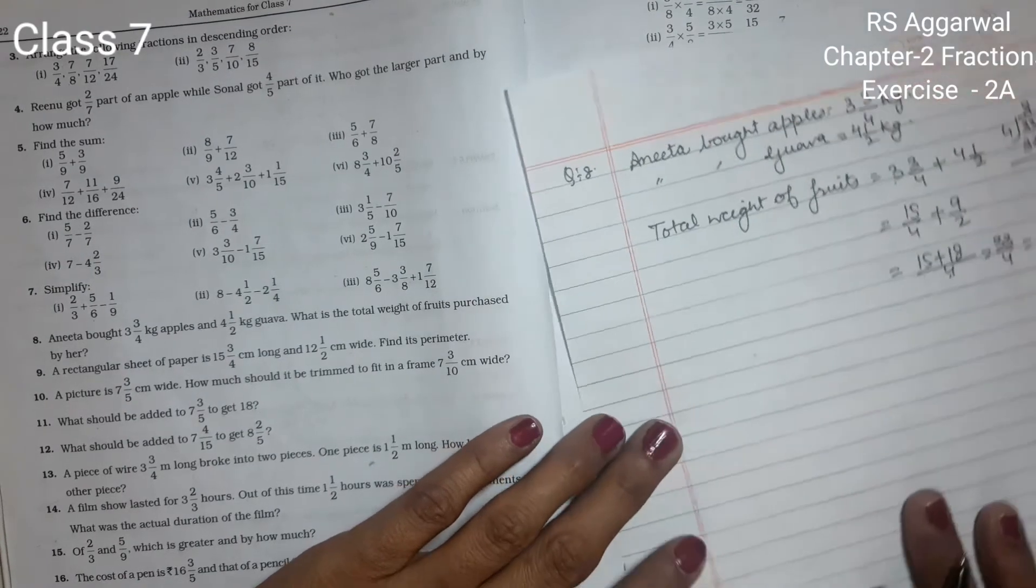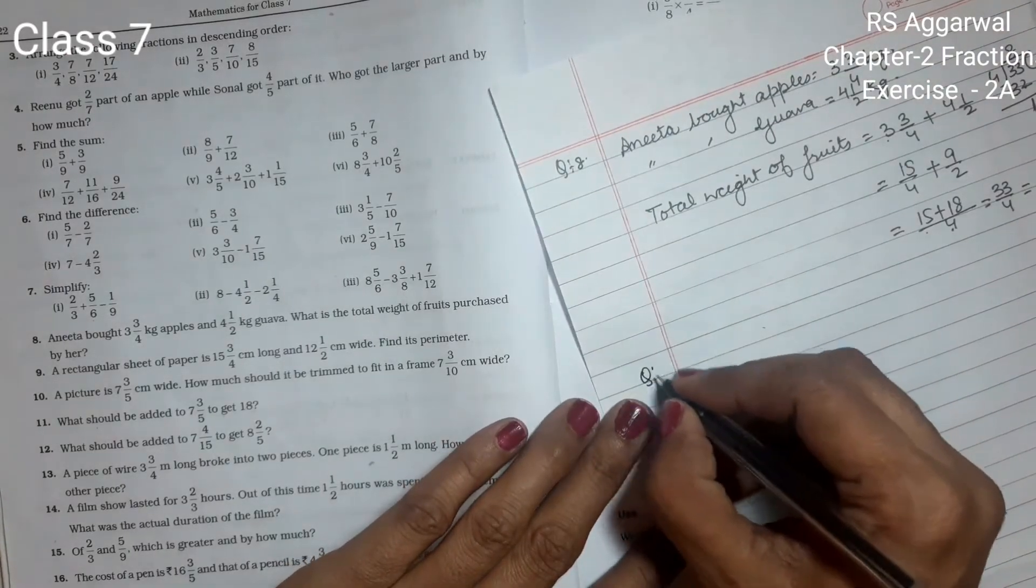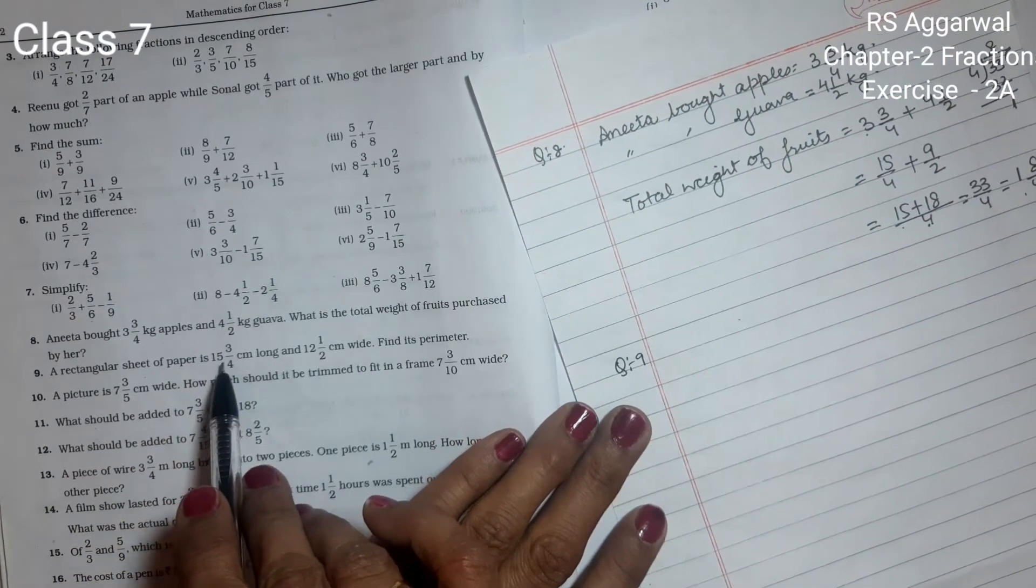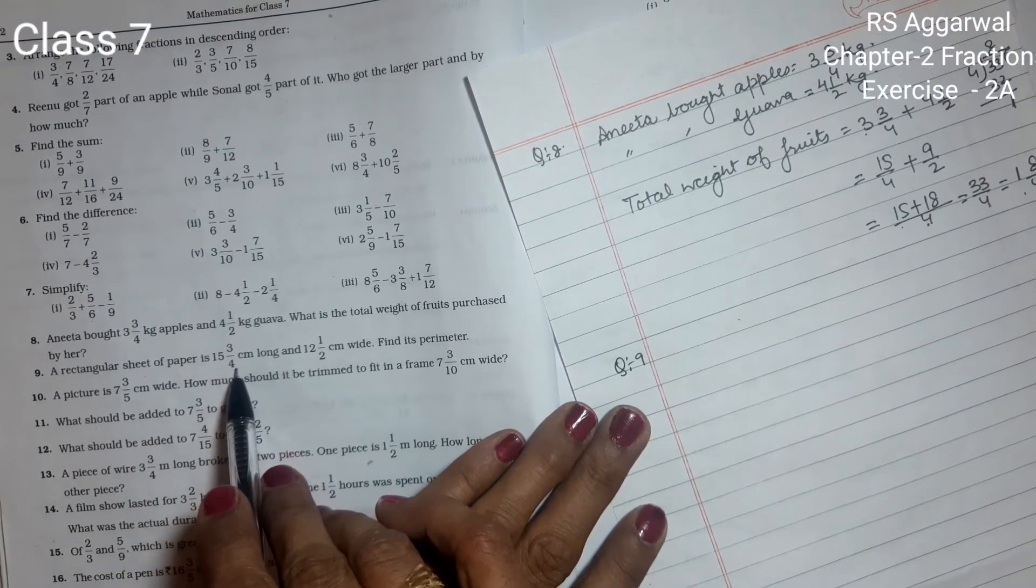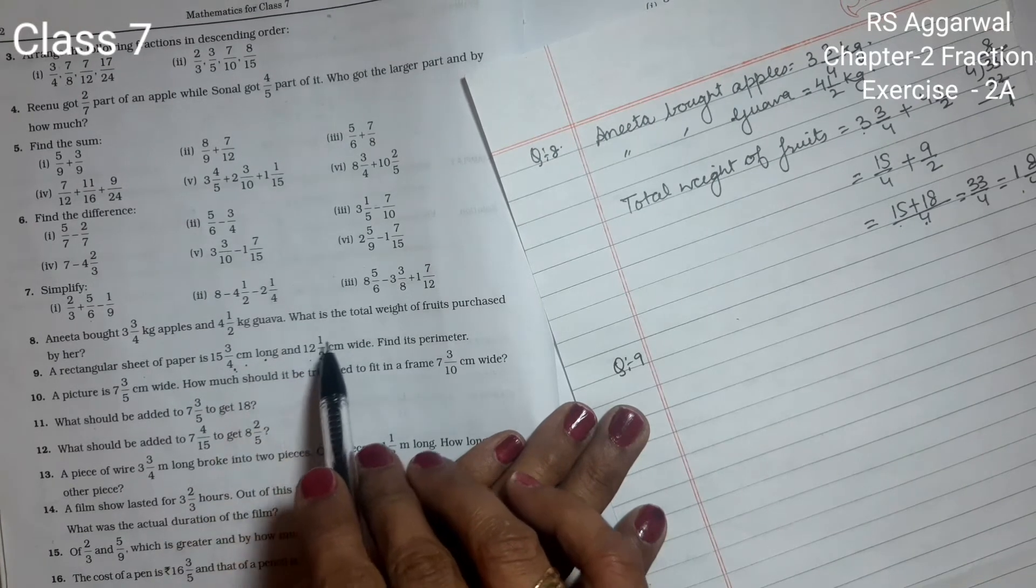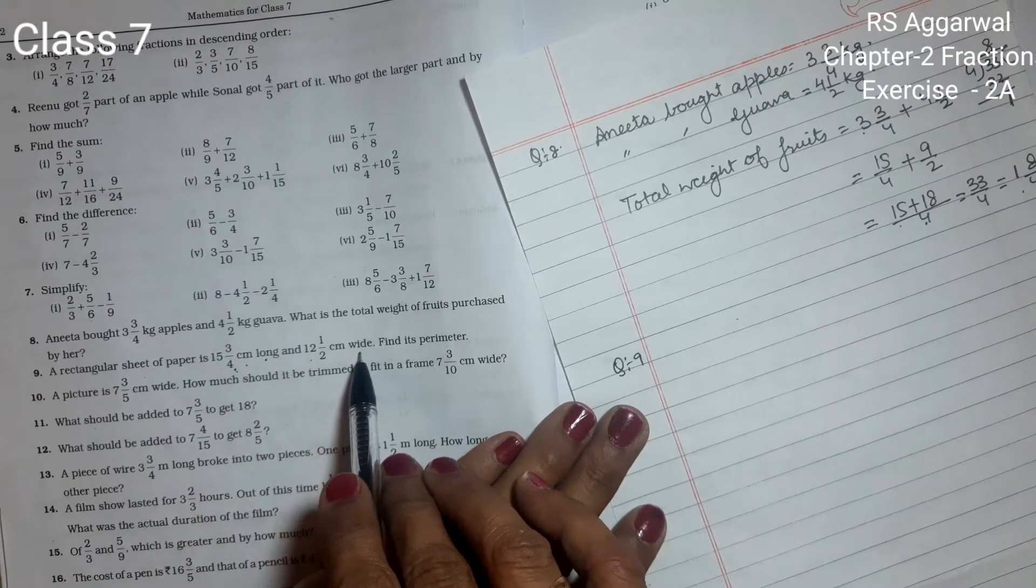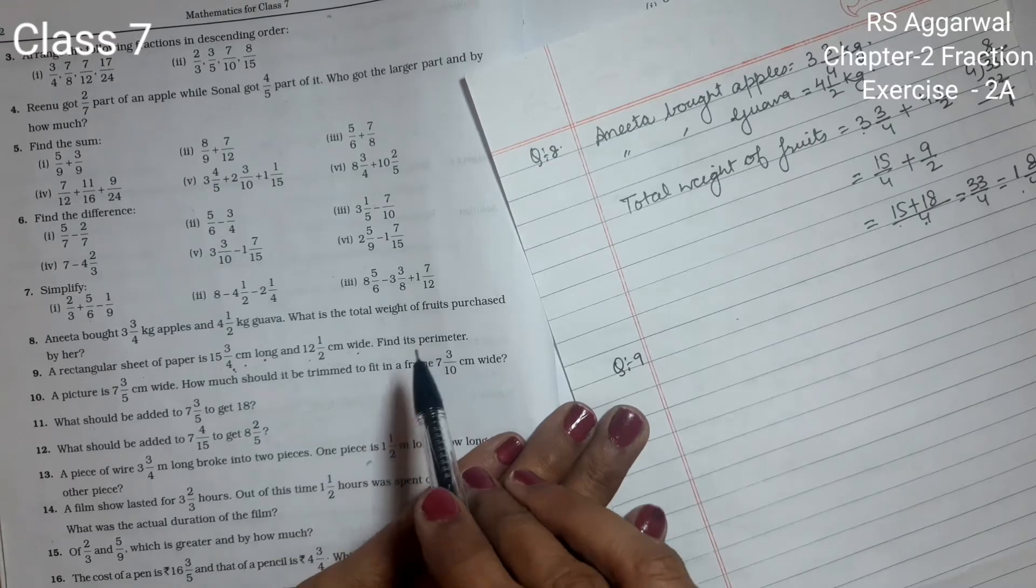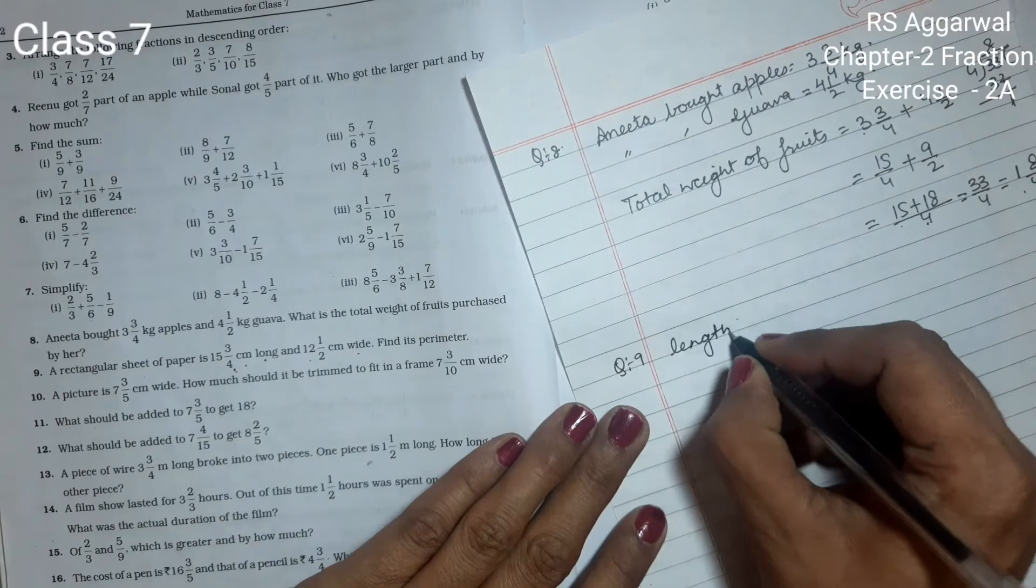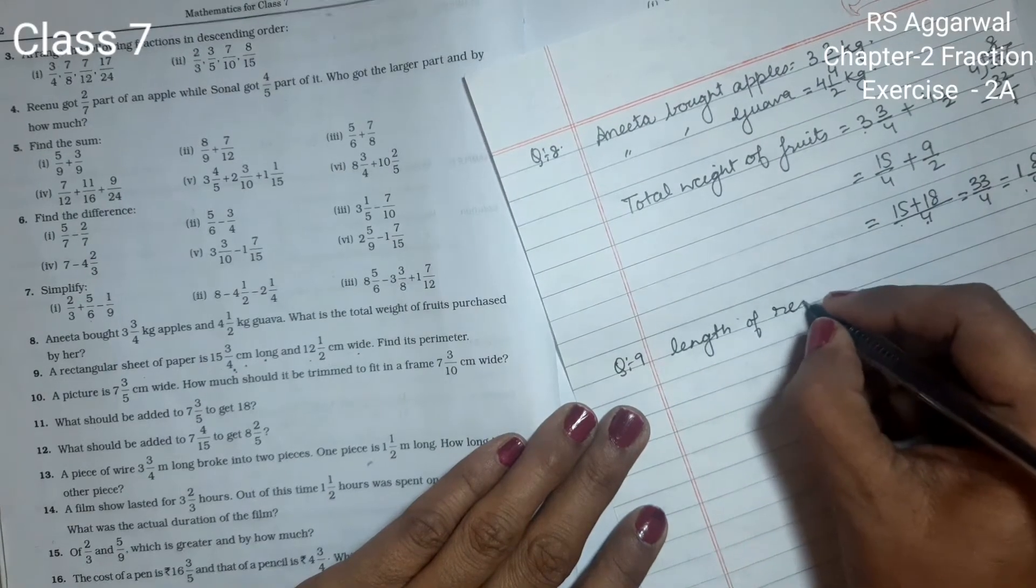Now we will do question 9. A rectangular sheet of paper is 15 whole 3 upon 4 cm long and 12 1 upon 2 cm wide. Find its perimeter. We have length of rectangular sheet 15 whole 3 upon 4 cm, breadth of rectangular sheet is 12 1 upon 2 cm.